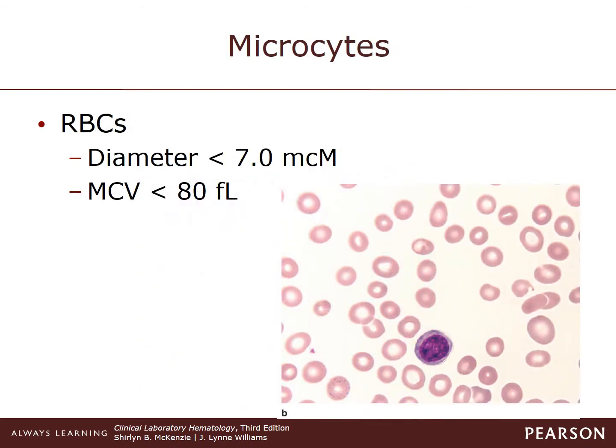Microcytes are erythrocytes with a diameter of less than 7 microns and are present when the MCV is less than 80 femtoliters. This cell usually is hypochromic but can be normochromic as well. Microcytes in the shape of smears can appear hyperchromic.